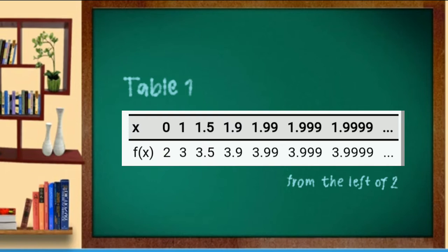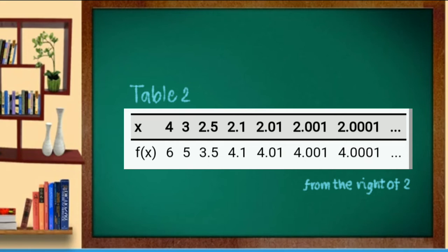So, instead of trying to figure it out for x equals 2, let's try approaching it closer and closer. In this table, we let x approach 2 by starting at 0. As the assigned values of x come closer to 2, you'll observe that the f of x gets closer to 4.